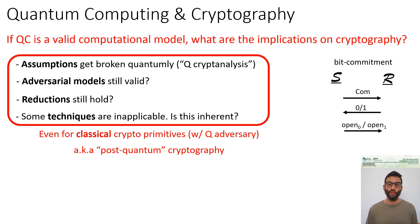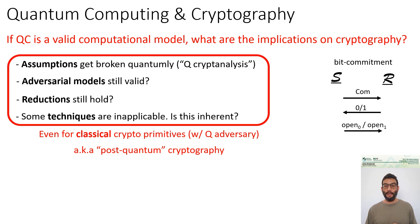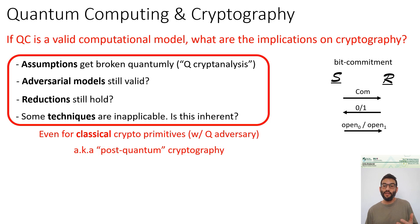How do we formalize that the sender cannot change their mind? Consider the following experiment: the sender sends a commitment, and the receiver chooses to ask for an opening of 0 or 1. If the sender cannot change their mind, they should only be able to open to one value — so in at least one case they fail. Another way to think about it: the sender can open to 0 or to 1, but not both simultaneously.